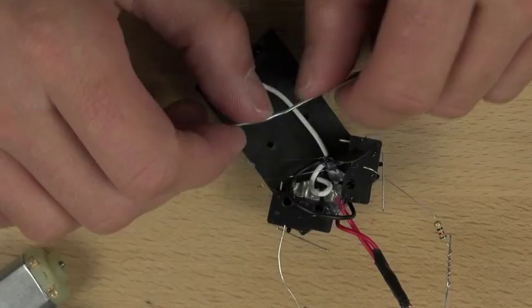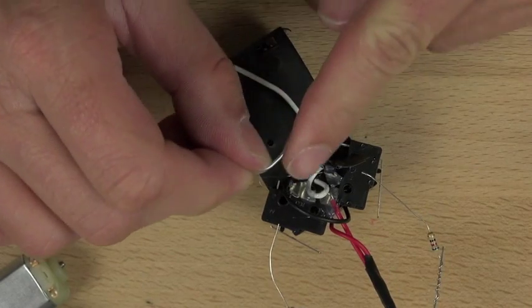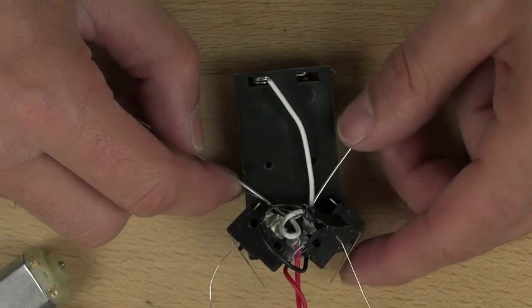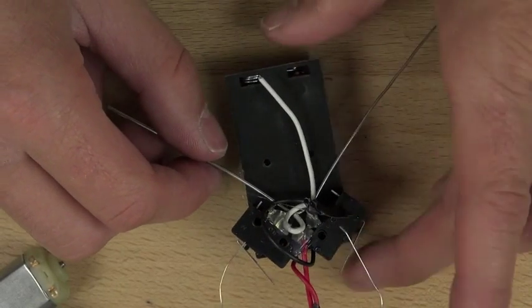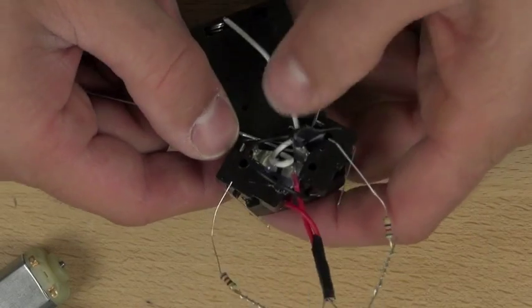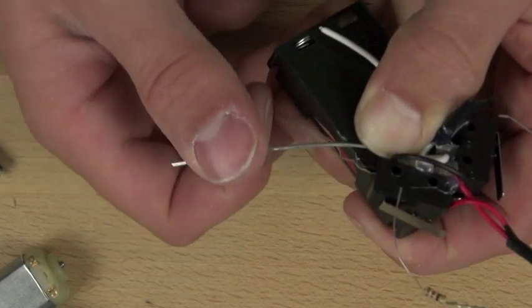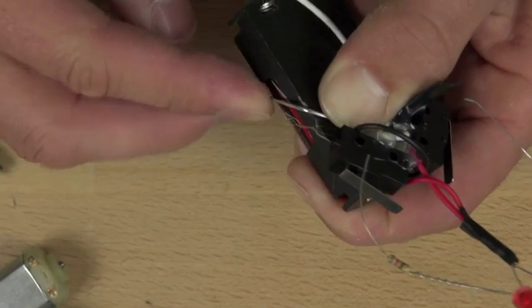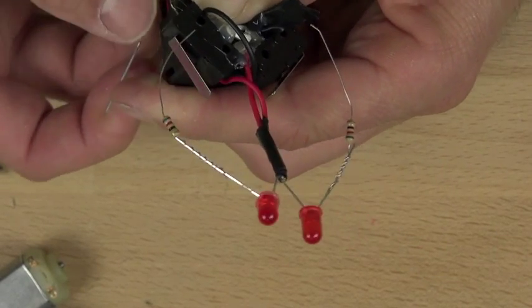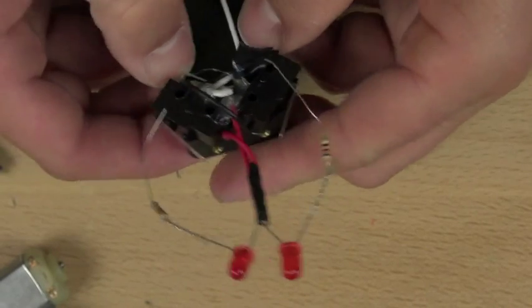So once we've gotten the paper clip straightened out, we're going to bend it at a 90 degree angle so that it fits snugly against our switches. So once it's in place, we will basically take your thumb and hold it against the paper clip and then just bend it. And we're using basically our battery holder as a forming tool, and we're bending it straight down and then just a little bit forward.